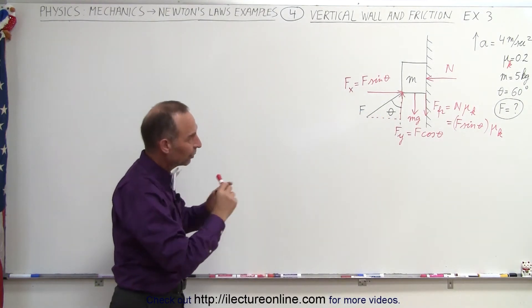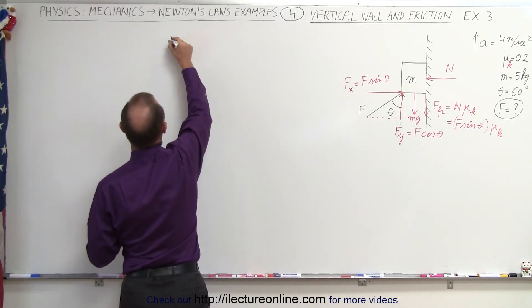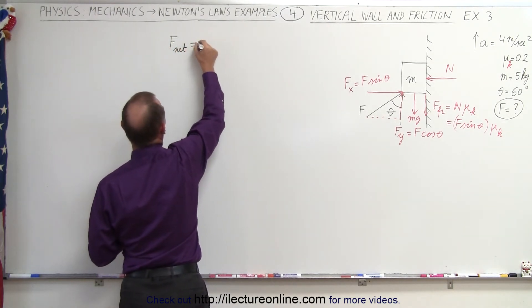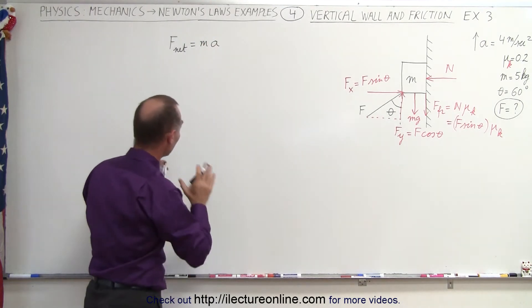So now that we've identified all the forces, we're now ready to start with the equation. F net is equal to mass times acceleration, and in this case it's not zero, so we leave it like that.